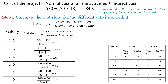For activity 4-5 the cost slope is 10. We then rank the activities by cost slope. The minimum cost slope is 10 for activity 4-5, so it gets rank 1. Next is 25 for activity 3-4 at rank 2, then 40 for activity 2-4 at rank 3, then 50 for activity 1-2 at rank 4, and 60 for activity 2-5 at rank 5.